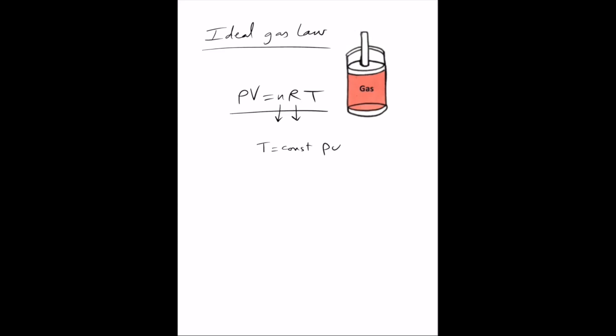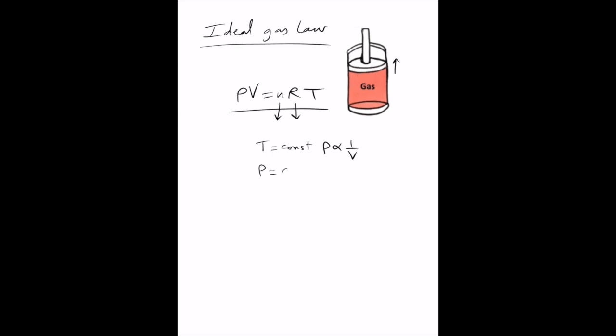If the temperature of the gas is kept constant, then the pressure is inversely proportional to volume — increasing the volume will reduce the pressure and vice versa. This is because when the volume increases there are fewer molecules per unit volume, and therefore less force exerted by the molecules per unit area at the walls of the container, reducing the pressure.